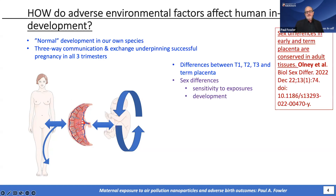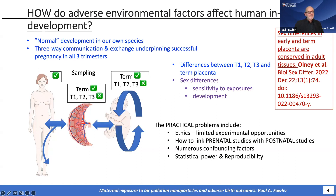The placenta itself changes across the trimesters, and the placenta is different from the first trimester to the term placenta. There are also sex differences in terms of how sensitive a fetus will be to particular exposures and how it develops, and some of these differences are retained even in adulthood. Practical problems include ethical constraints, and if you're sampling, you can sample from the mother across pregnancy, the placenta at term, and the neonate at term.